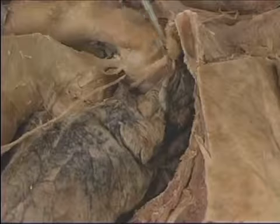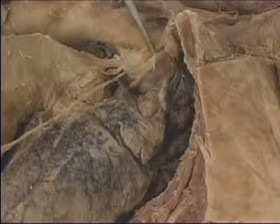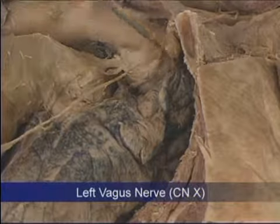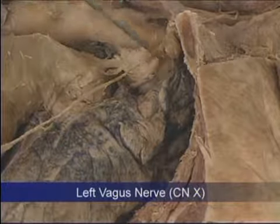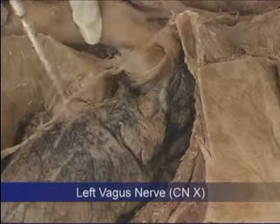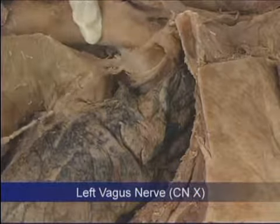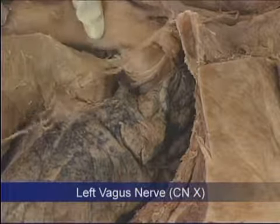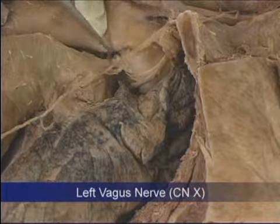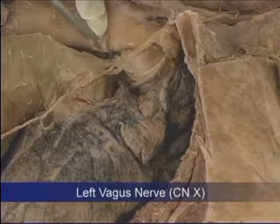Answer number three: this is the left vagus crossing the arch of aorta. We can also see the phrenic nerve above it, going anterior to the root, and the ligamentum arteriosum on the superior aspect.